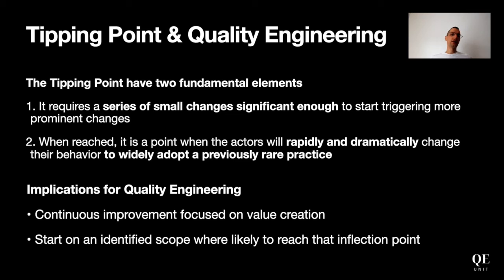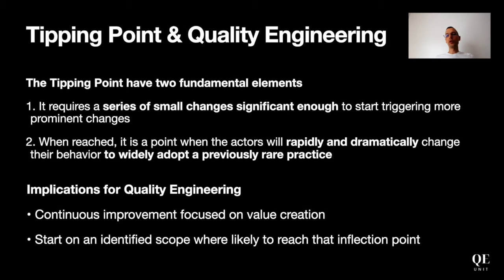These small changes must bring value because they need to meet the requirement of being significant enough. Another key consideration is that we don't need to impact the entire ecosystem at once. If we want to implement quality engineering in a team of 100 people, our first objective should not be to change everyone. We need to start with the team that will enable us to reach the chasm and tipping point, then cascade across the organization — limiting effort, increasing probability of success, and being faster at delivering value.